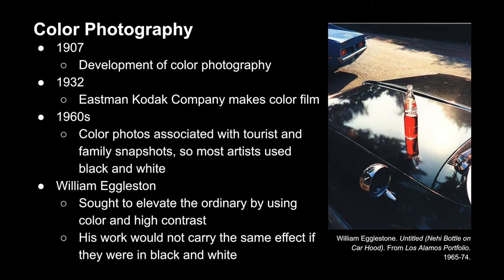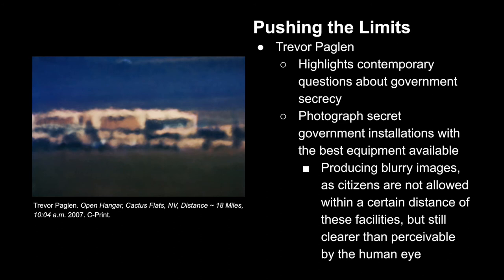In more contemporary times, we see artists starting to push the limits of the medium. Trevor Paglin is interested in contemporary questions about government secrecy, and in addressing this he photographs secret government installations with the best photo equipment available to him — getting as close as he could to these facilities and photographing them with advanced photo mechanisms. While he yields fairly blurry images, they are far more descriptive than what's perceivable by the human eye. The example here was taken 18 miles away at 10:04 a.m.